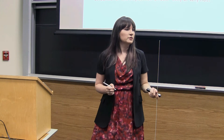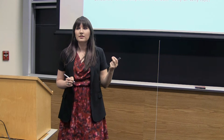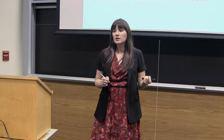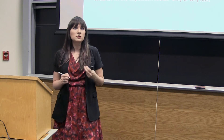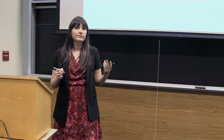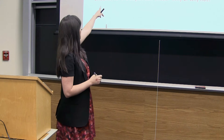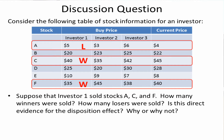So in this simple six-stock world, investor one has four winners and two losers. This illustrates the point that we're likely to be in a world where the number of winners in your portfolio is just higher than the number of losers. We sold stocks A, C, and F — so we sold two winners and one loser.